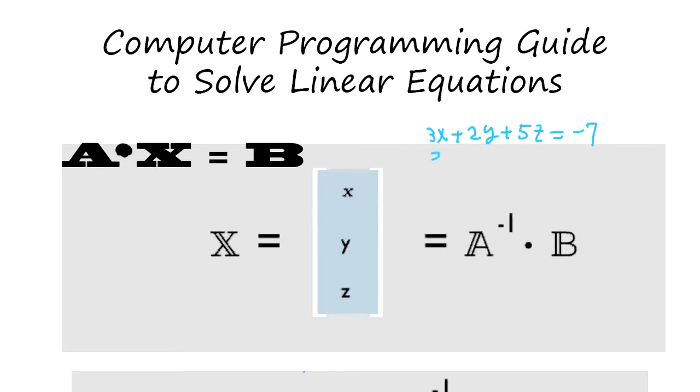and 2x plus 6y plus 4z equals 2, minus 6x plus 2y plus 9z equals minus 1.